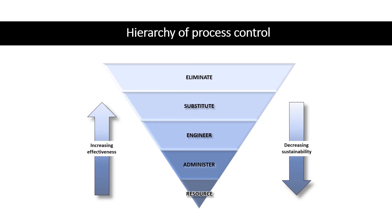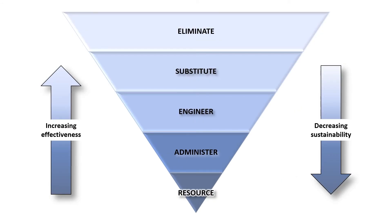A hierarchy of process control offers a layered approach for controlling the process at various levels. The highest priority is given to the most effective control at the top. The intent is to establish preventive control over performance and variability of defects — in other words, prevention through design. This hierarchy includes five layers of controls: elimination, substitution, engineering, administration, and resourcing.